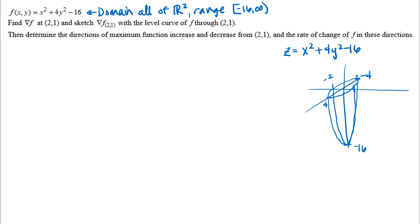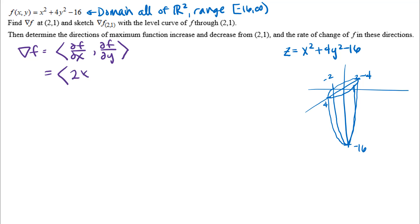What the problem actually asks us to find is the gradient of f — the vector of partial derivatives. The partial derivative with respect to x is 2x, and the partial derivative with respect to y is 8y. So the gradient vector in general is the vector (2x, 8y).